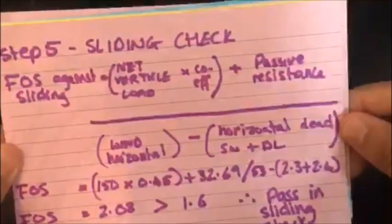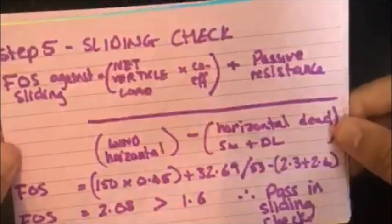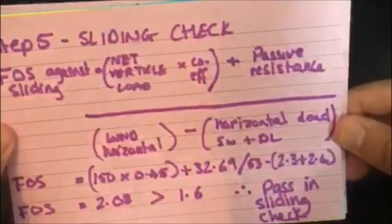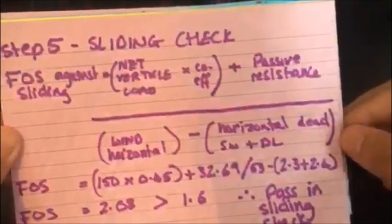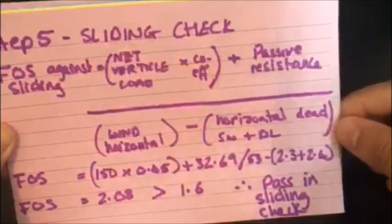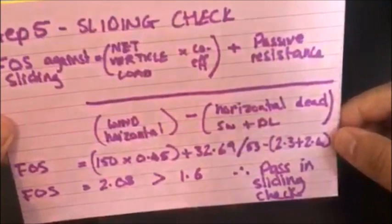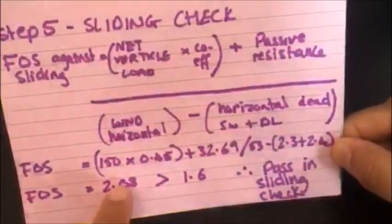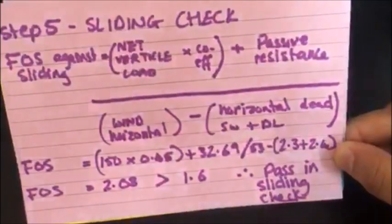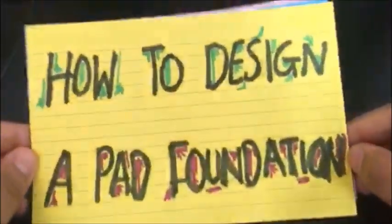So the net vertical load worked out, which is 150, times by the coefficient value, I believe that's a coefficient value for friction, and plus the passive pressure, which is 32.69, over the wind horizontal. So in this case, I've been given that the wind horizontal is 53 kilonewtons minus 2.3 plus 2.4. So the 2.3 is the horizontal dead load, and the 2.4 is the horizontal self weight load. And then once you put that into the calculator, you'll get a value of 2.04 factor of safety. And if this is greater than 1.6, then it passes in the sliding check. And that is how you design a pad foundation.